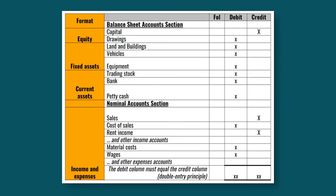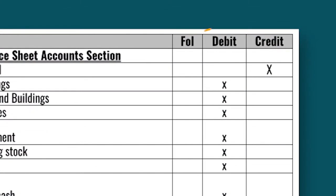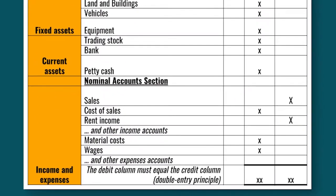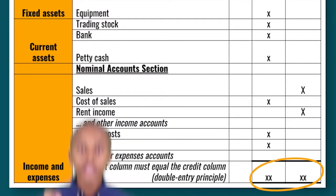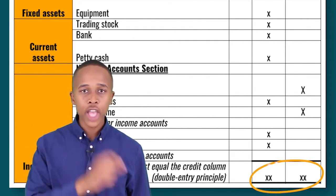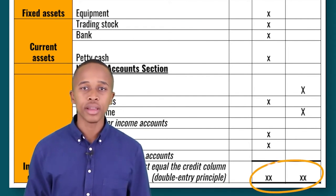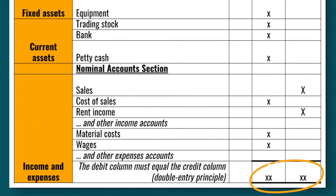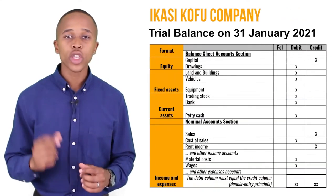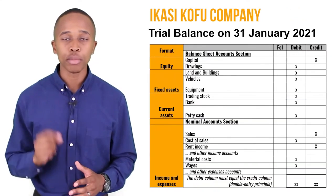All the debit entries will be recorded on the trial balance on the debit side, and all the credit entries will be recorded on the trial balance on the credit side. What's important to note is that the debit and credit side must equal. If it's not in balance, the bookkeeper has to go back and check whether a mistake or an error was made. Let's look at the format of the trial balance a bit closer.